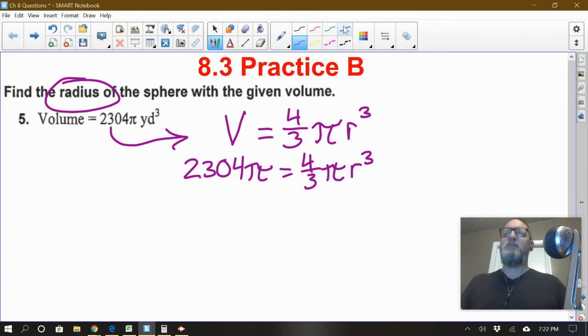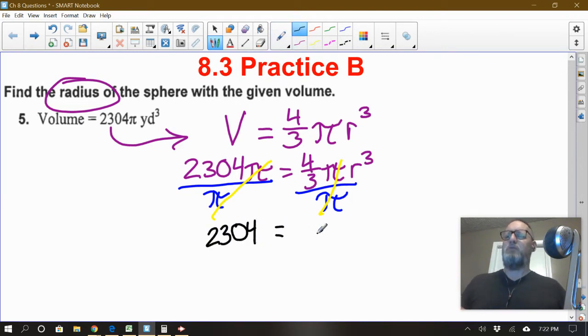Alright. Now taking a look at this, what could I do to simplify? How about this? There's a π on both sides being multiplied. So let's get rid of that. Divide left and right sides by π. The reason I did that was to simplify the problem. Those π's are gone. So now it says 2,304 equals four thirds r to the third power.